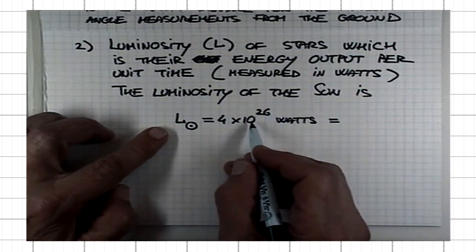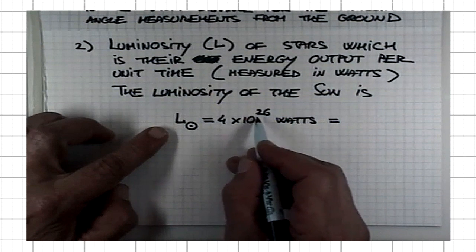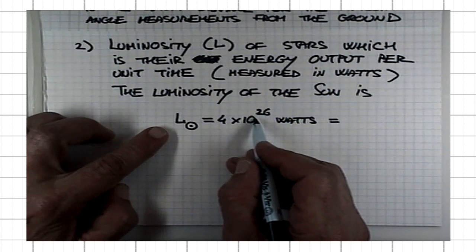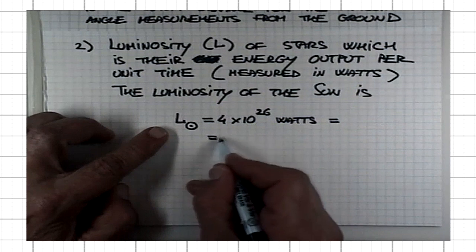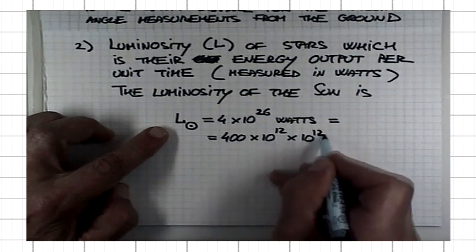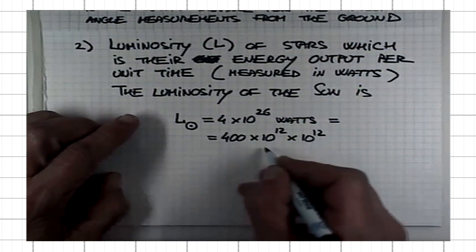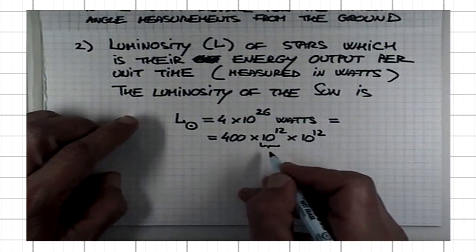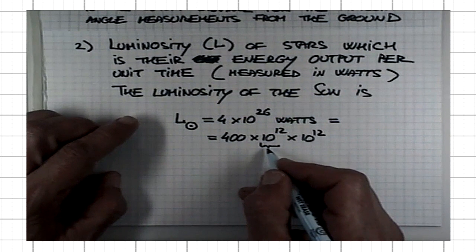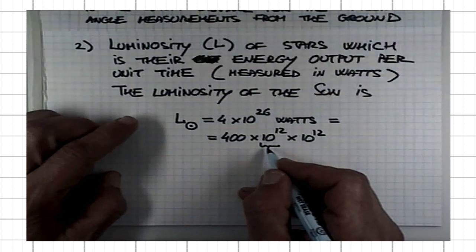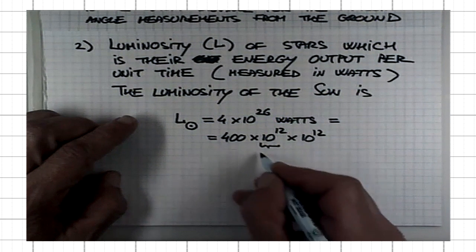4 times 10 to the 26 is like 400 times 10 to the 12 times 10 to the 12. Each factor of 10 to the 12 is basically a trillion. A million is 10 to the 6, a billion is 10 to the 9, and a trillion is 10 to the 12.